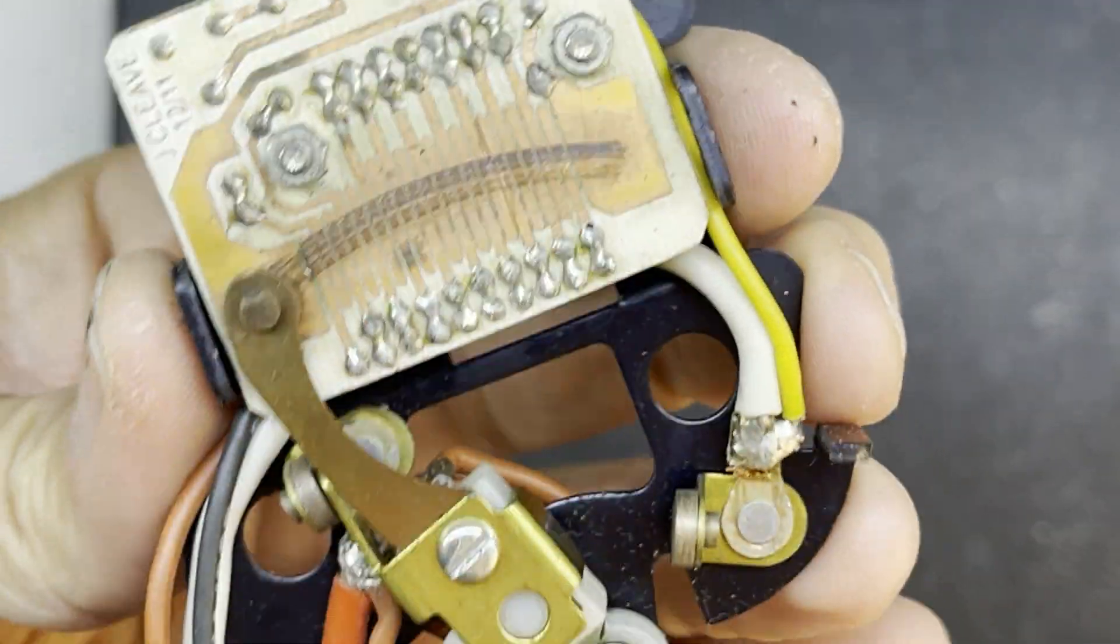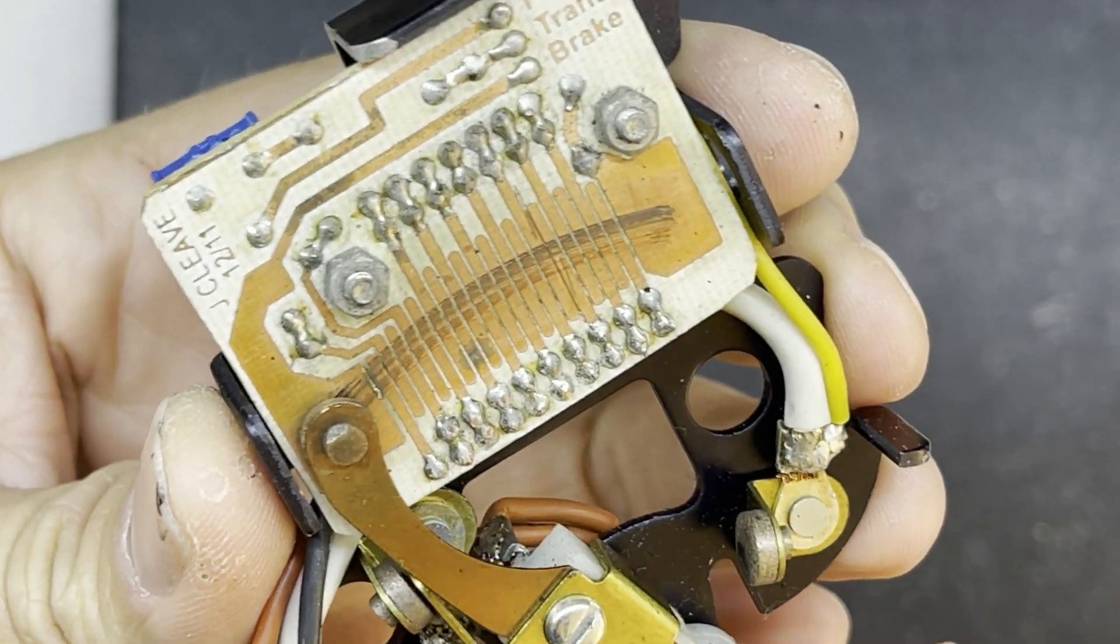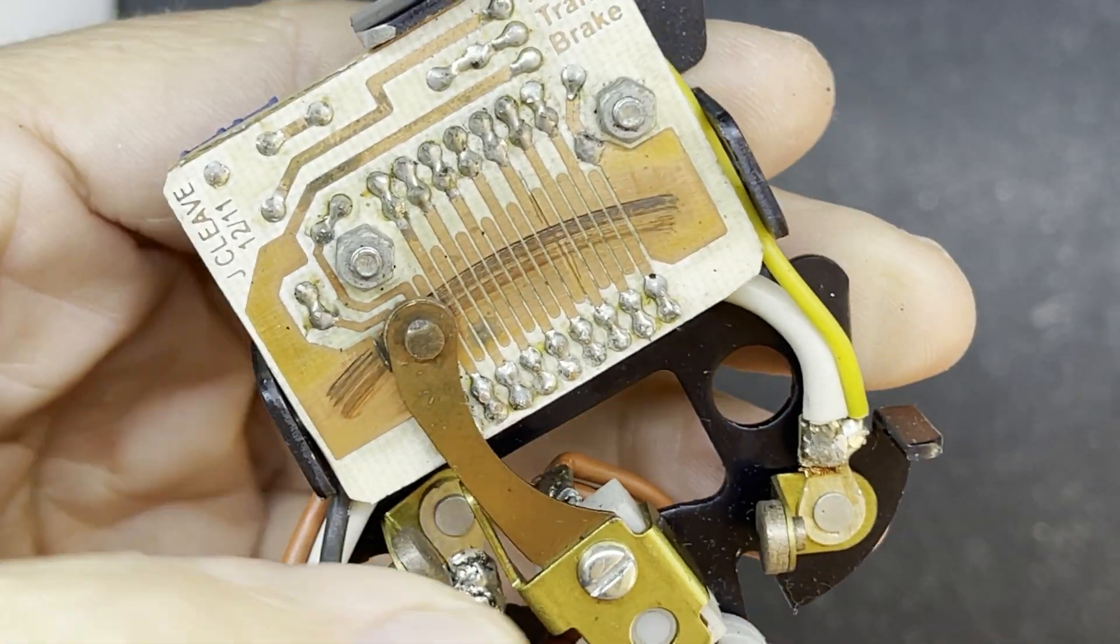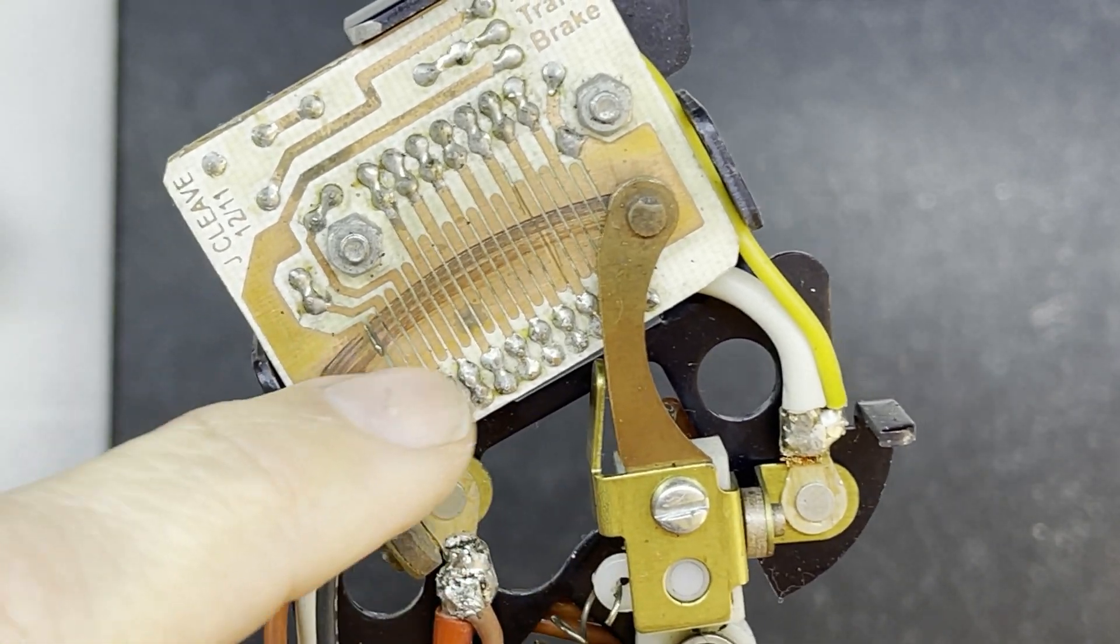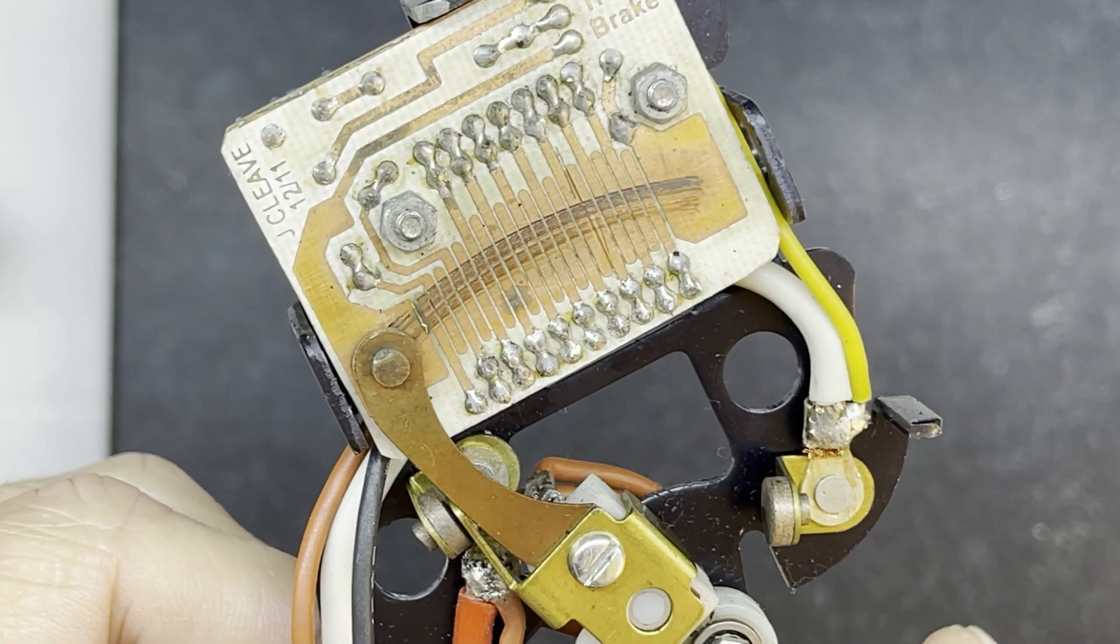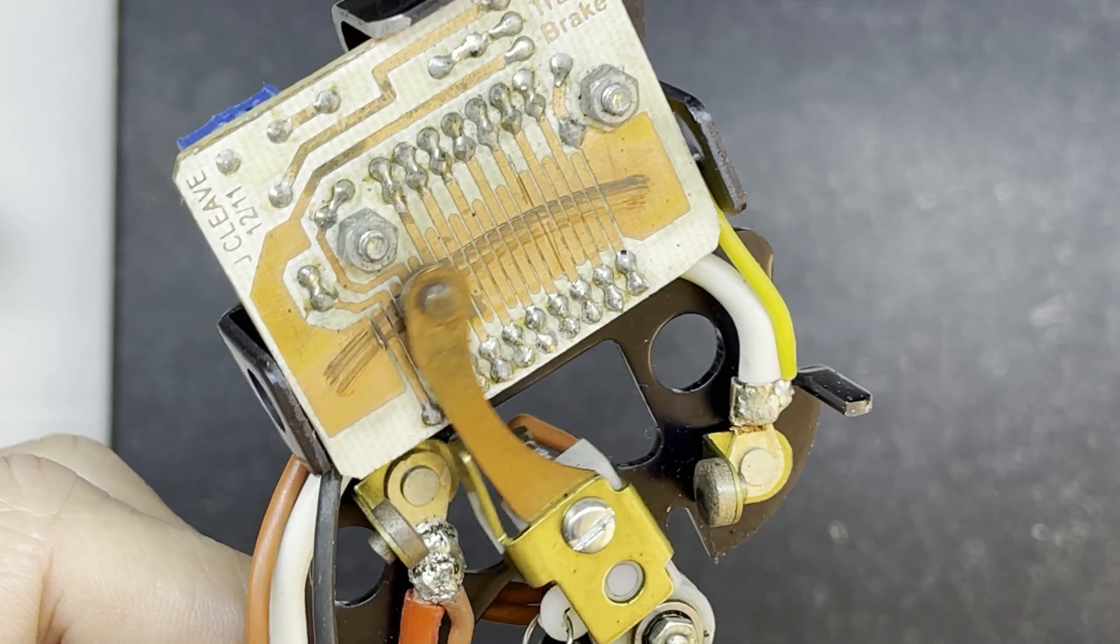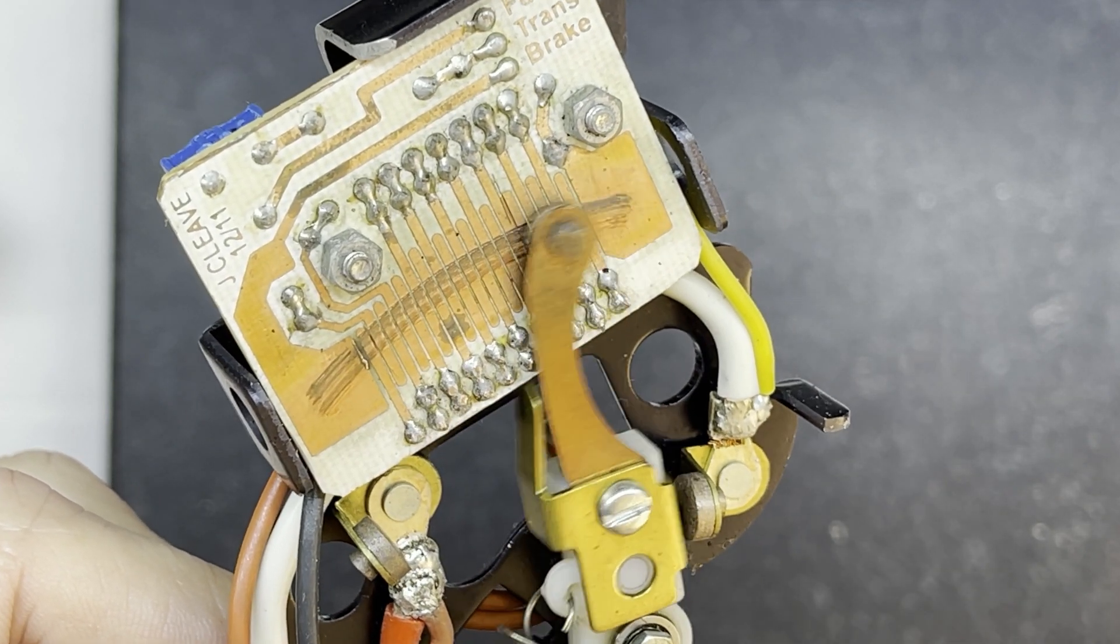So now the cover's off, we can just have a closer look at what's inside. We've got this wiper arm here, part of the controller. A wiper arm goes onto the board and that's what picks up the different resistances to control the speed of your car.